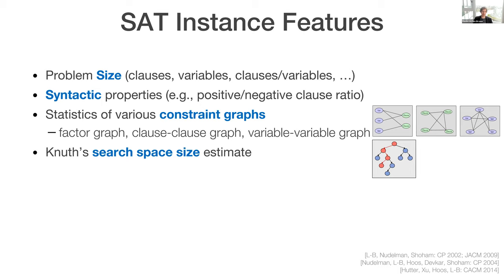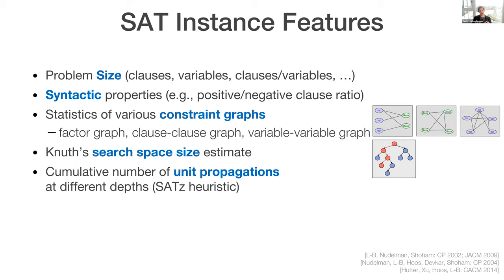I can use the search space size estimate due to Don Knuth, where you look at, you make sort of random probes in a DPLL space and say, what's the average depth in the tree? And that's an estimate of the log number of nodes in the tree. I can look at the cumulative number of unit props that I would get at different depths using a given heuristic, like the SADC heuristic, and say, how amenable to this heuristic does the formula appear to be.